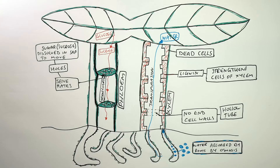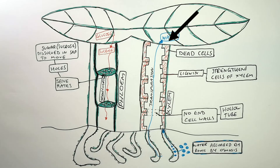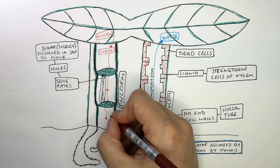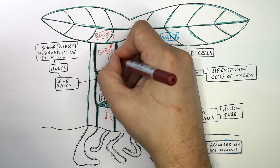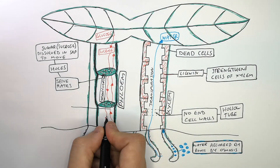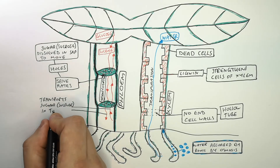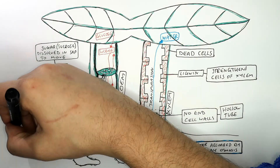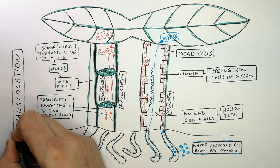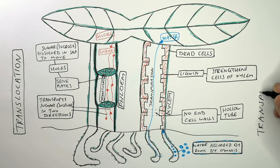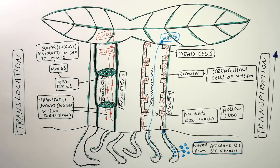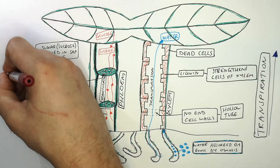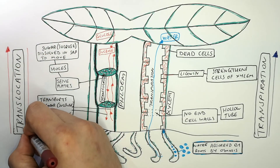Translocation is the movement of sugar around the plant, not transpiration. Transpiration is the movement of water through the xylem. Transpiration occurs in one direction, whereas translocation happens bidirectionally — up and down the phloem in two directions. So the phloem transports sugar in two directions by the process of translocation, while transpiration happens in the xylem in one direction from the roots to the leaves.